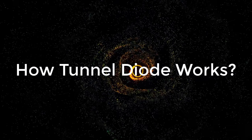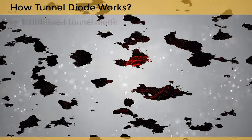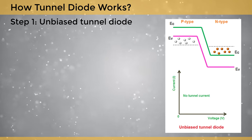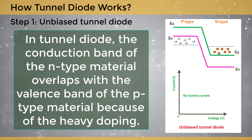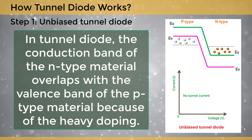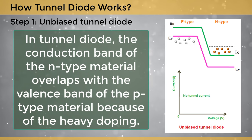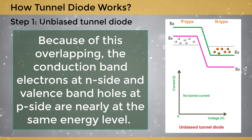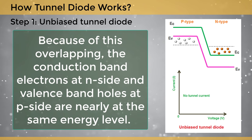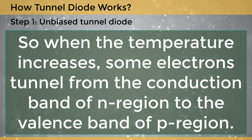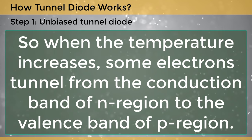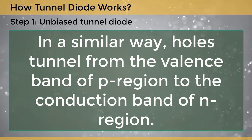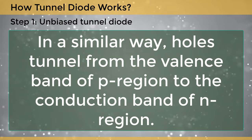Step 1: Unbiased tunnel diode. When no voltage is applied to the tunnel diode, it is said to be unbiased. The conduction band of the n-type material overlaps with the valence band of the p-type material because of heavy doping. Because of this overlapping, the conduction band electrons at the n-side and valence band holes at the p-side are nearly at the same energy level. When the temperature increases, some electrons tunnel from the conduction band of the n-region to the valence band of the p-region. Similarly, holes tunnel from the valence band of the p-region to the conduction band of the n-region.